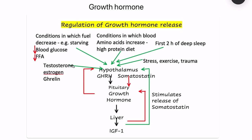Growth hormone is released by acidophilic cells of the pituitary. Its release is under dual control: growth hormone releasing hormone (GHRH) from the hypothalamus stimulates its release, while somatostatin, also known as growth hormone inhibitory hormone, inhibits it.